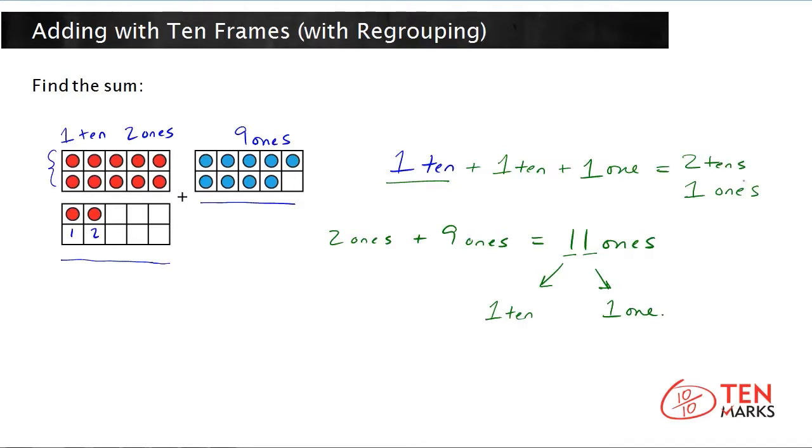So your sum has two tens and one one, or it's the number twenty-one. So that's what the sum is.